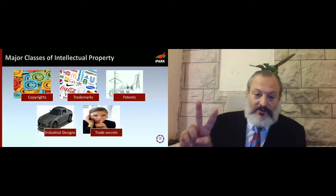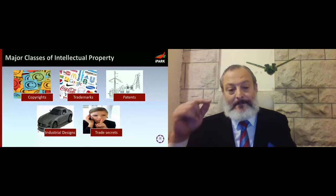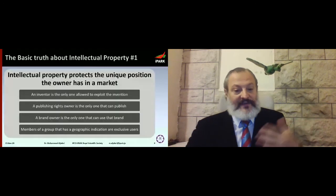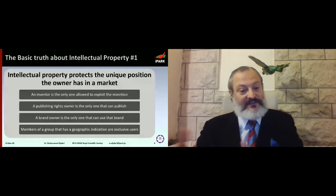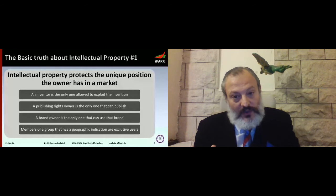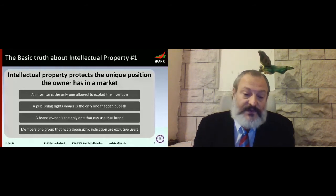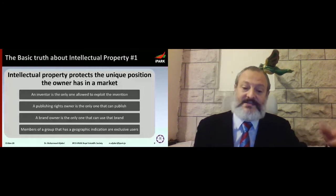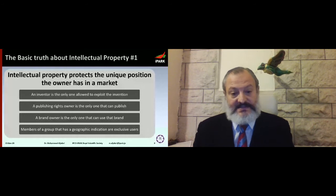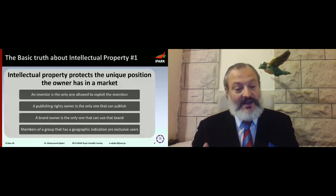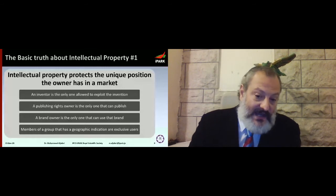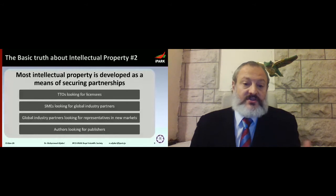Two basic truths about intellectual property: Truth number one — the basic role of intellectual property is to protect you in a market. You innovated, you wrote a book, you invented something, and intellectual property gives you the exclusive right to use it in a market. That means there's no competition — you can use the courts to kick competitors out of the market legally. This is very interesting for business because it reduces risk.